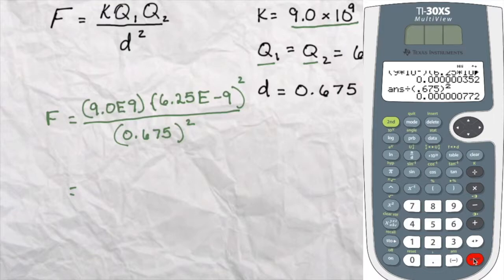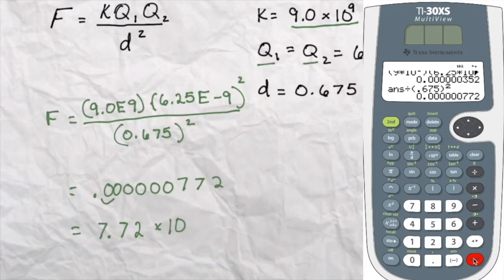Which looks to be .000000772. But we can write this in scientific notation. And say 7.72 times 10 to the 1, 2, 3, 4, 5, 6, 7. Negative 7th power.